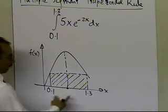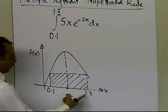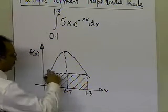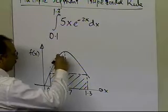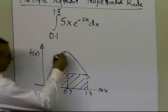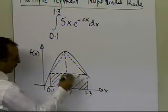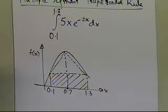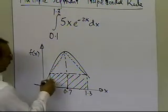So the halfway is 1.4... sorry, 1.2, so 0.6, so 0.7 is halfway through, and what I can do is I can draw a trapezoid like this, and I can draw another line like this.